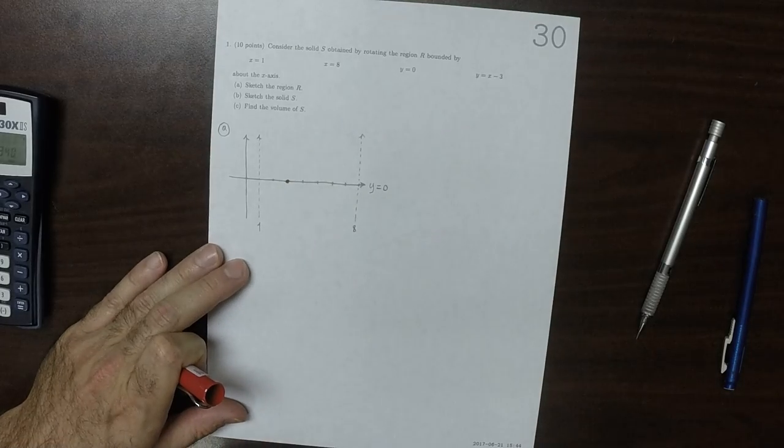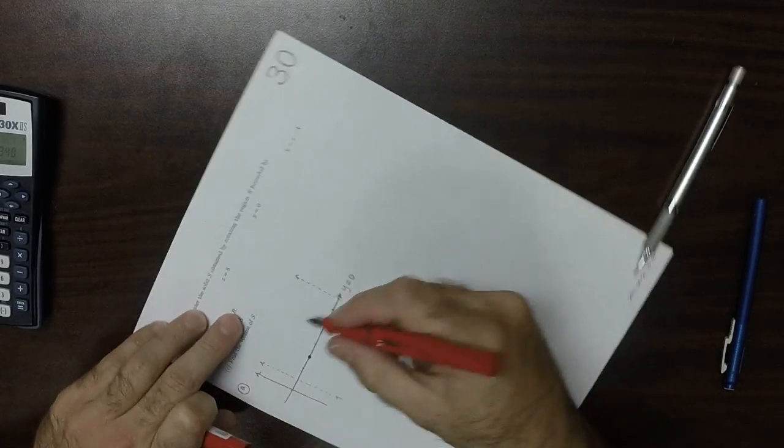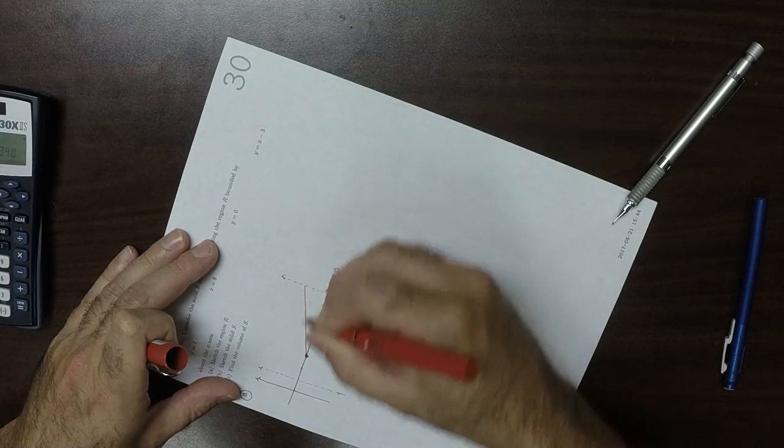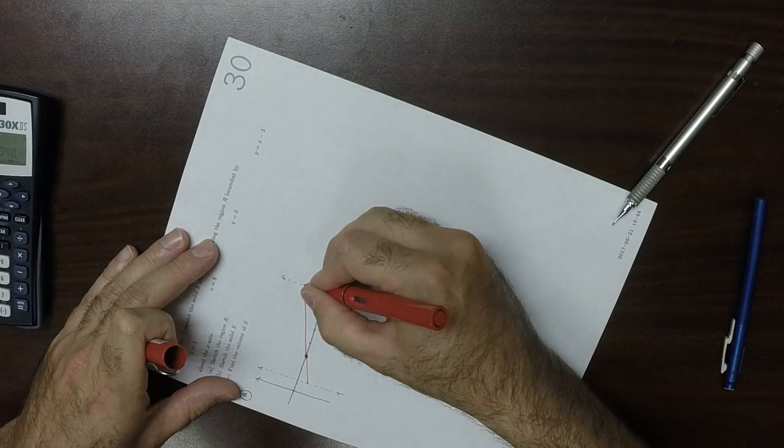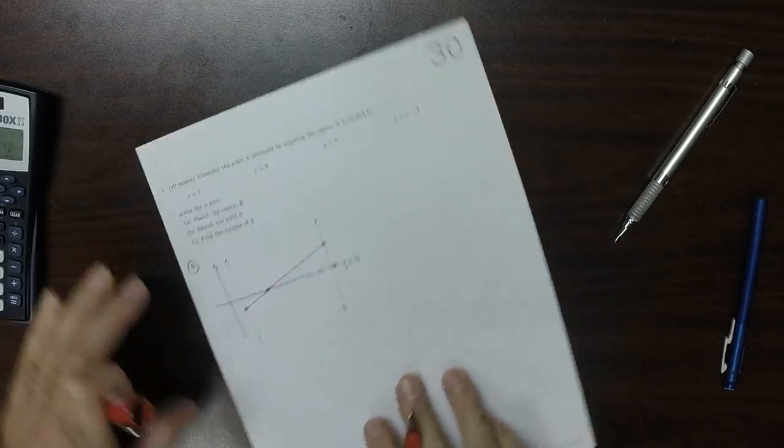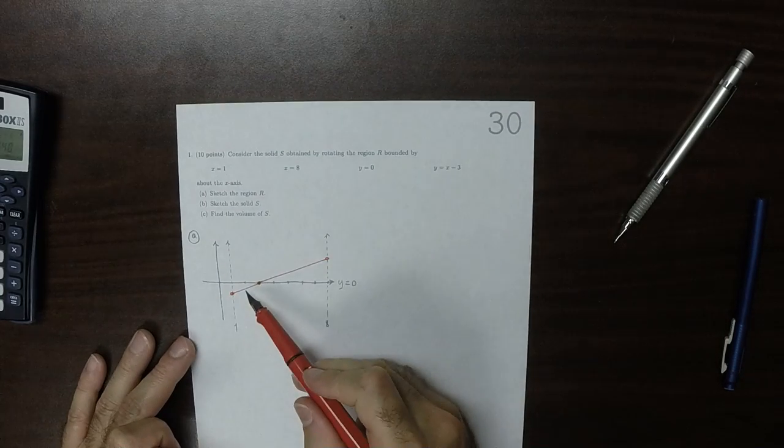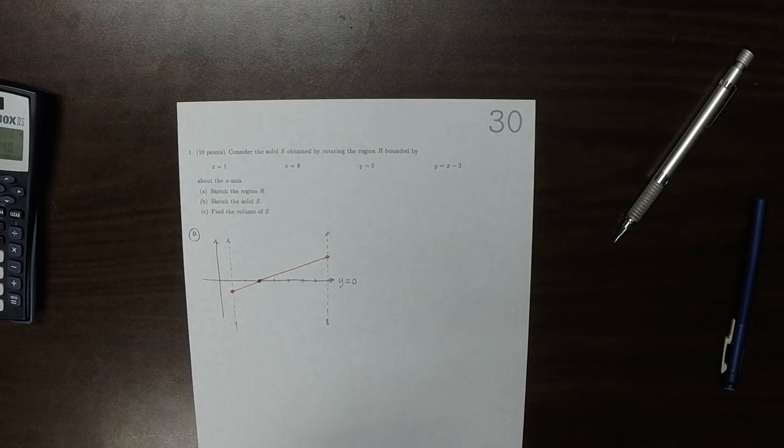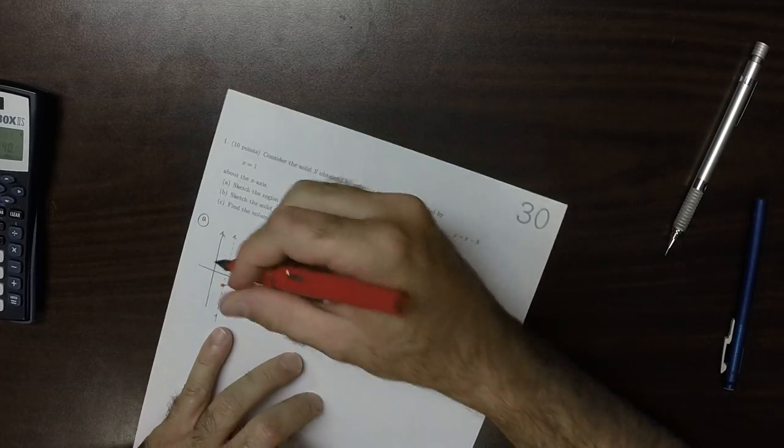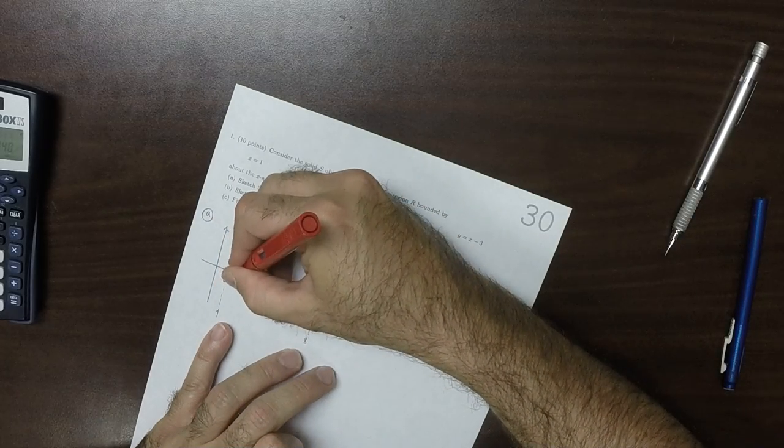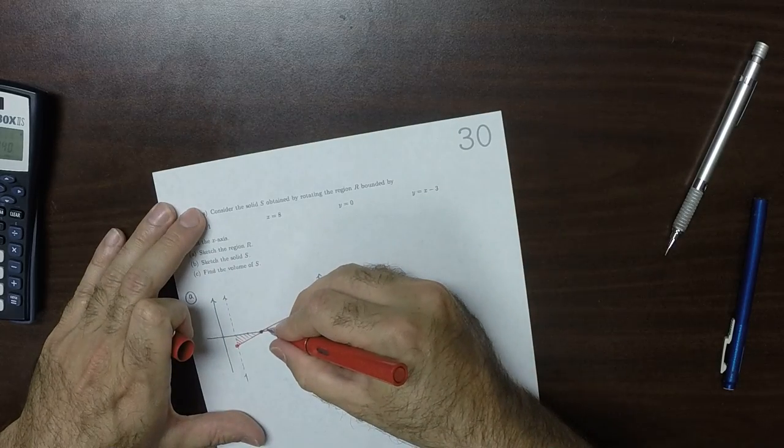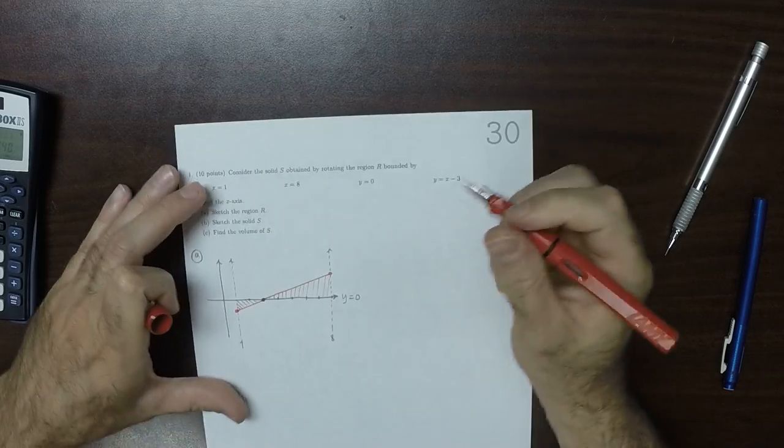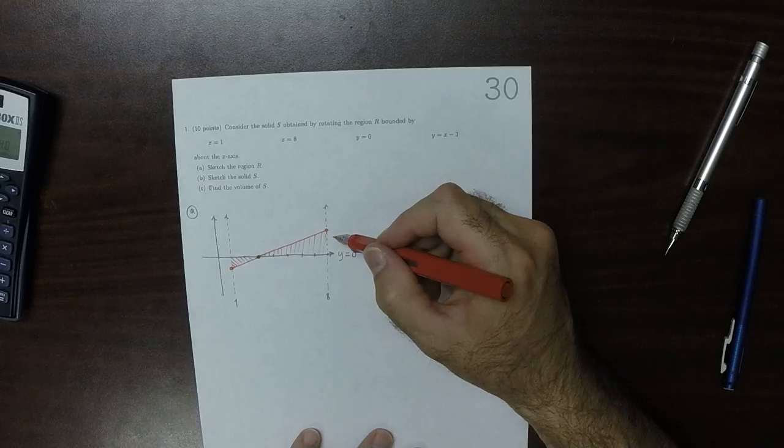And then what's happening is that this line does this. So the line is sometimes under and sometimes over the axis, so the region in question is this region. Okay, so let's go ahead and figure out these points, that might be useful.